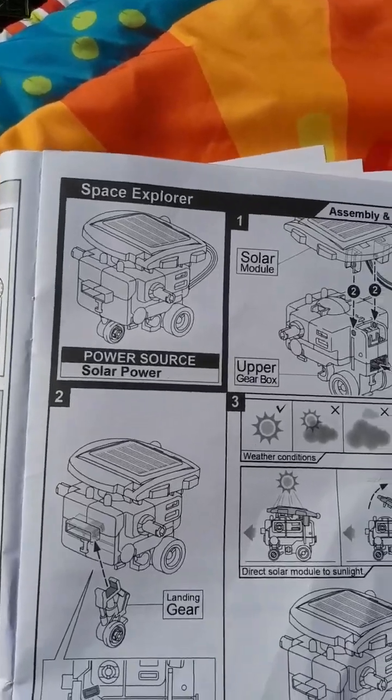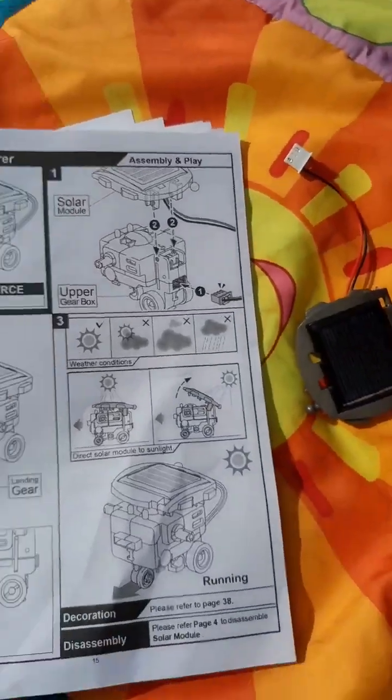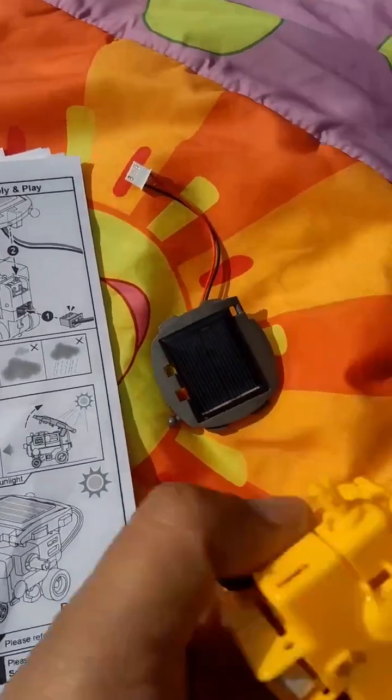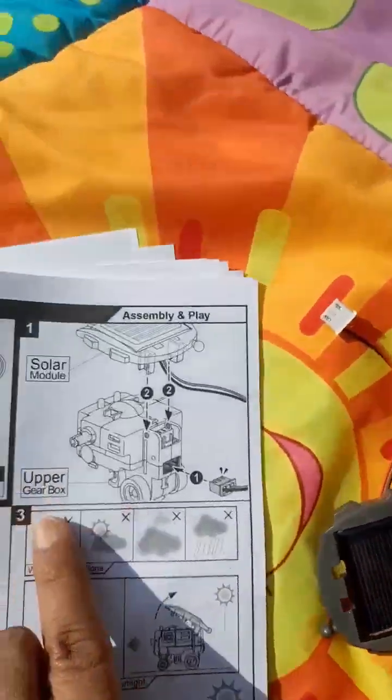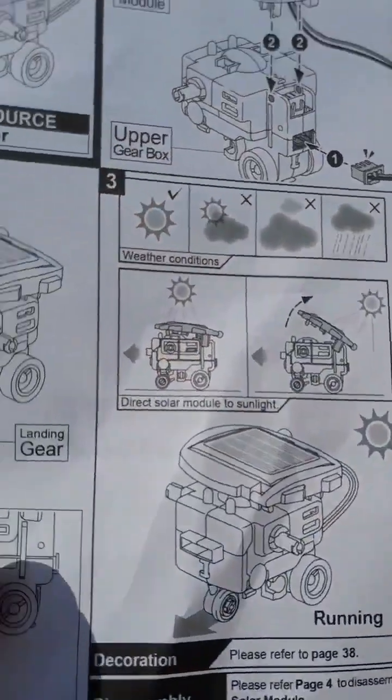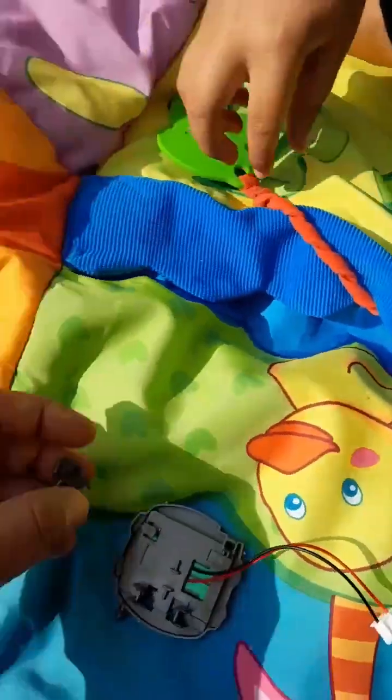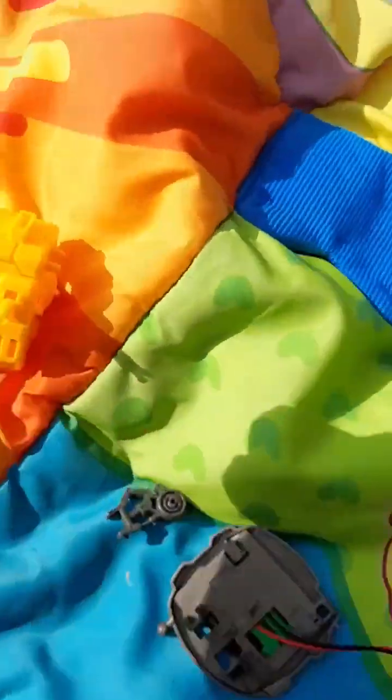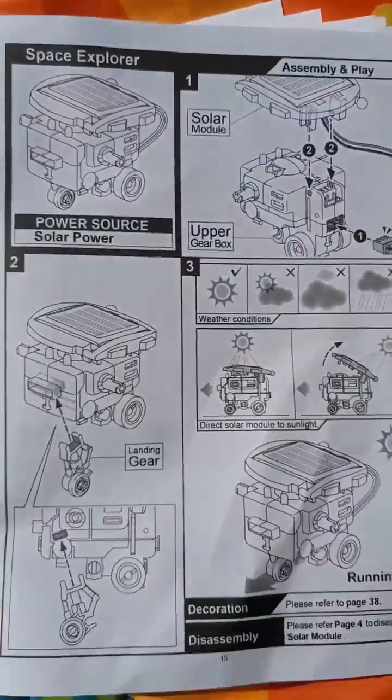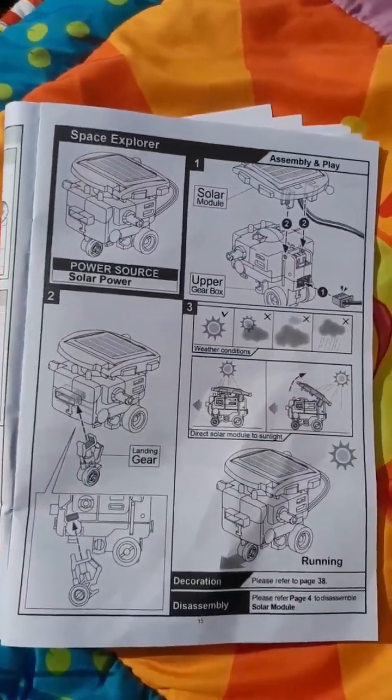Now we will make the space explorer. To make the space explorer, we need three parts: one is the upper gear box, another one is the solar panel, and third part is the landing gear. So attach this part as shown in the directions like this.